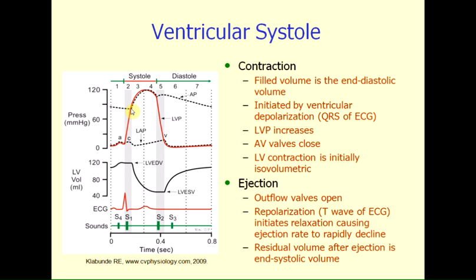Once the pressure within the left ventricle exceeds the pressure within the aorta, the aortic valve will suddenly open and the ventricle will rapidly eject blood into the aorta. The ventricle still undergoes systolic contraction, so its pressure continues to rise, as does the aortic pressure, because blood is being ejected into the aorta. As shown in the volume diagram below, the left ventricular volume is rapidly declining as blood is ejected out of the ventricle and into the aorta.